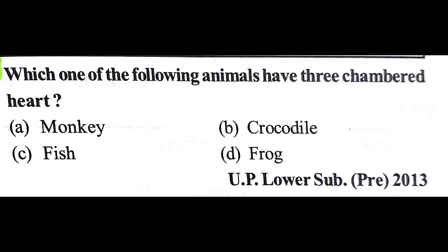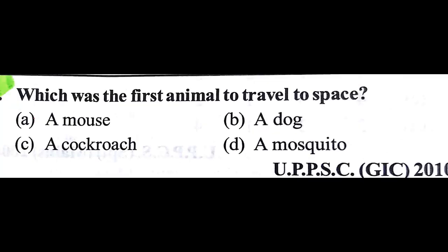Which one of the following animals has a three-chambered heart? The answer is D: frog. Which was the first animal to travel to space? The answer is A: a dog whose name was Laika, and the spaceship she traveled in was Sputnik.